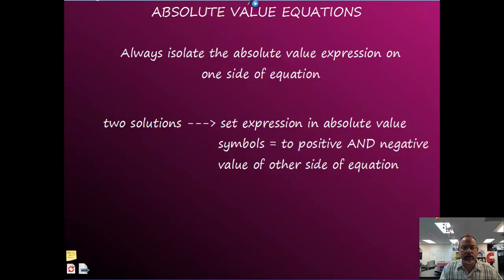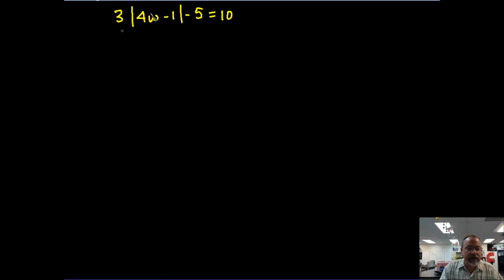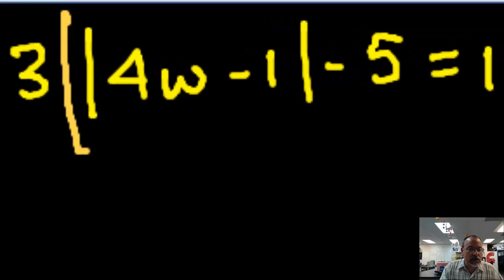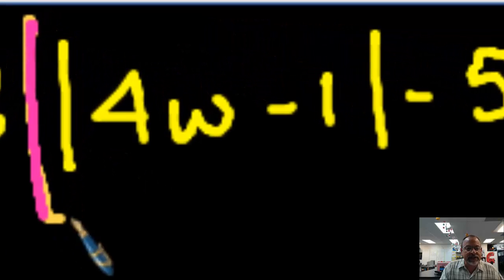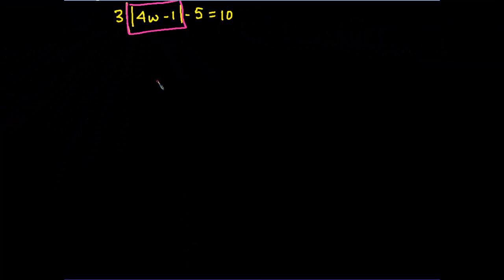And so here we're solving for the absolute value. So think of the absolute value like a variable. This absolute value is like a variable. It has to be by itself before you can create those two expressions. So you have to isolate it using the same tools that you would as if you saw an equation.